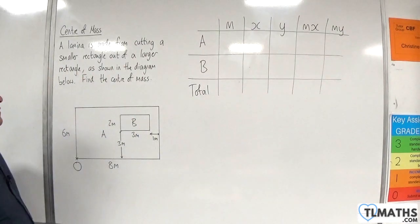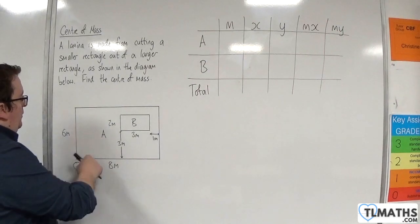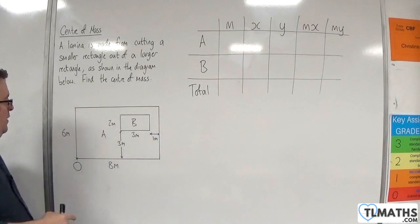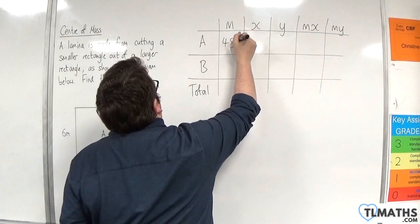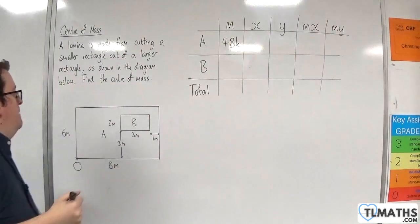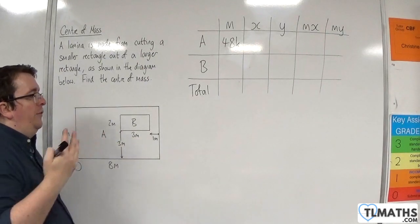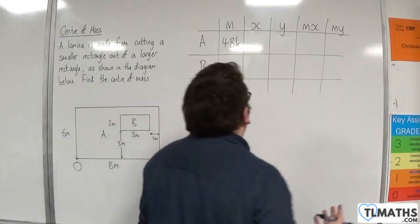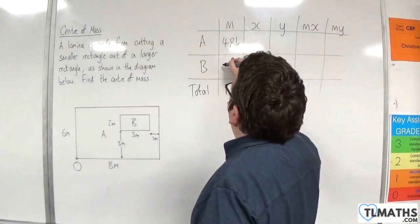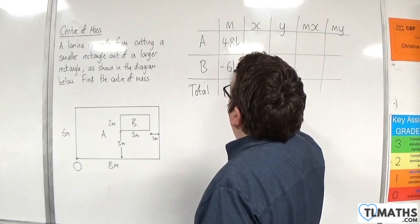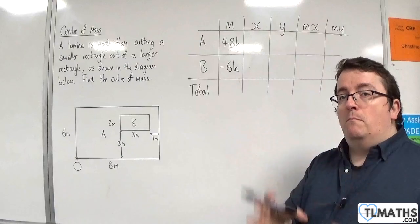OK, so, the mass of A is 6 times 8. So, that would be 48k. And the mass of B is going to be 2 times 3, which is 6, so 6k. But that's been cut out. So, we write in minus 6k. So, that mass has been removed.